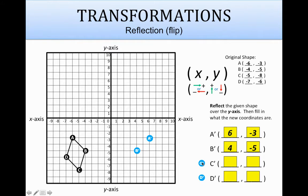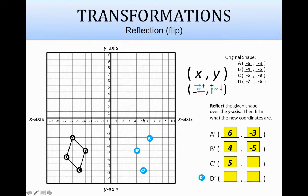We'll click and drag c prime and bring it over to where c is. Count how far away that is from the y-axis — it's 5 away. So it's going to be 5 away on the other side. The coordinates for that are positive 5 for x, and then 8 down, so negative 8 for y.